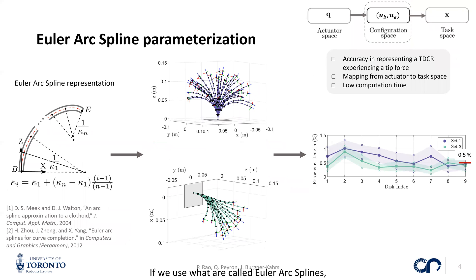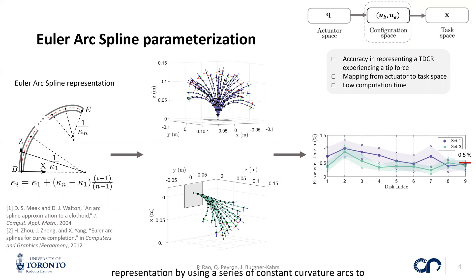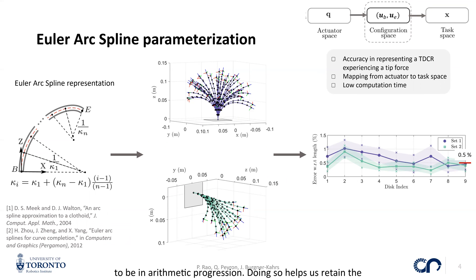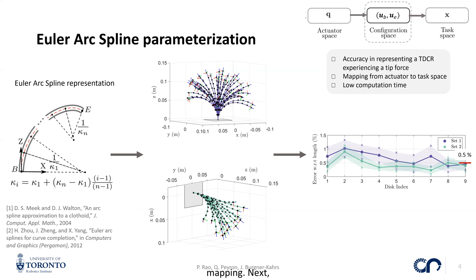If we use what are called Euler arc splines, we can combine the benefits of the constant curvature representation by using a series of constant curvature arcs to represent the backbone with their curvatures varying linearly, presuming them to be in arithmetic progression. Doing so helps us retain the use of matrix operations to compute the configuration to task space mapping.